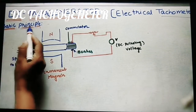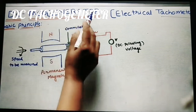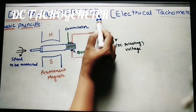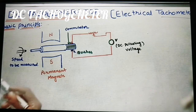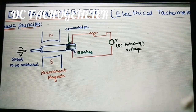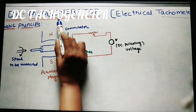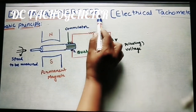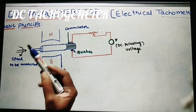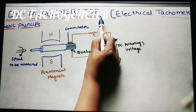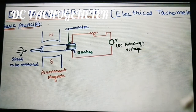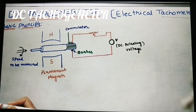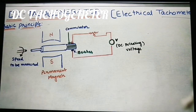Let us discuss the basic principle of this DC tacho generator. First, consider what a generator is and where we install them. We install generators in big apartments, shopping malls, and theatres to supply electricity. The basic principle is that a generator converts mechanical energy into electrical energy — the input is mechanical energy and the output is electrical energy. This generator uses that principle to give us speed.